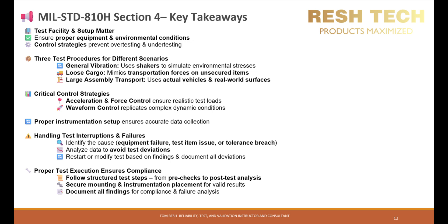We covered proper instrumentation setup, which ensures accurate data collection, and handling test interruptions and failures: identify the cause such as equipment failure, a test item issue, or a tolerance breach; analyze the data to avoid test deviations; and restart or modify tests based on findings and document all deviations. Lastly, we covered proper test execution to ensure compliance. Follow structured test steps from pre-checks to post-test analysis. Secure mounting and instrumentation placement for valid results, and document all findings for compliance and failure analysis.